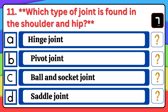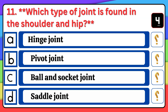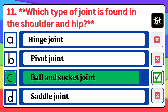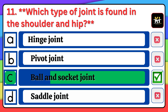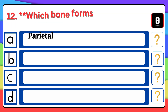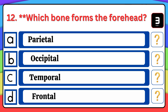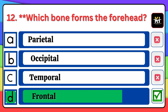Question number eleven: Which type of joint is found in the shoulder and hip? Question number twelve: Which bone forms the forehead? Correct answer: Option D — Frontal.